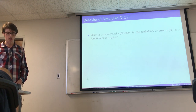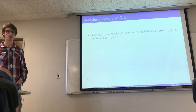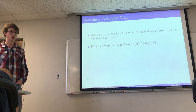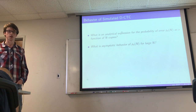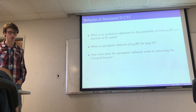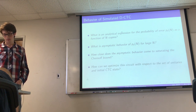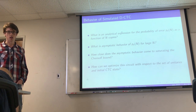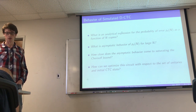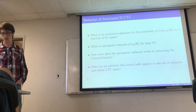Some interesting questions are: what is the analytical probability of error using this state discrimination scheme? How does the probability of error behave asymptotically for large n? How does it compare to the Chernoff bound? And how can we optimize the circuit in terms of the unitaries used and the initial CTC state?